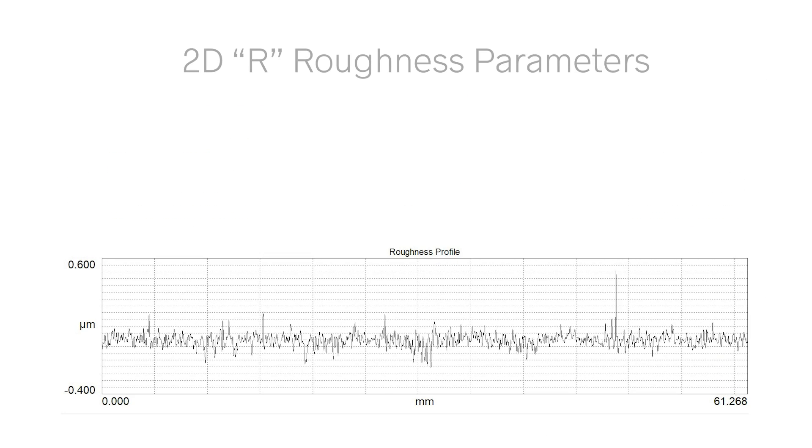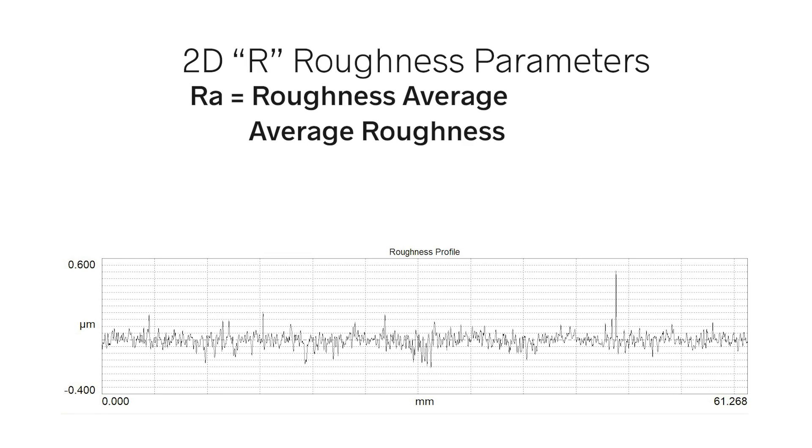First, let's look at the 2D case and the R, or roughness, parameters. RA is the roughness average, or more commonly, the average roughness. It's the most commonly specified roughness parameter.